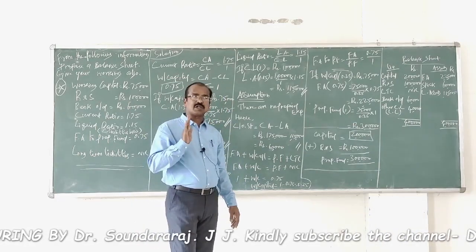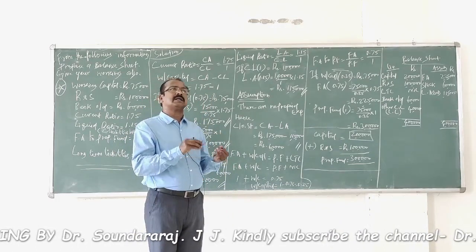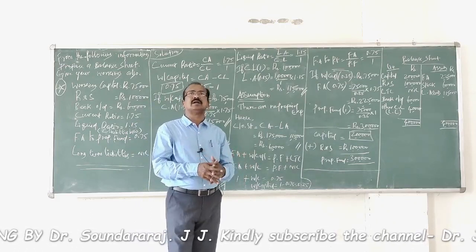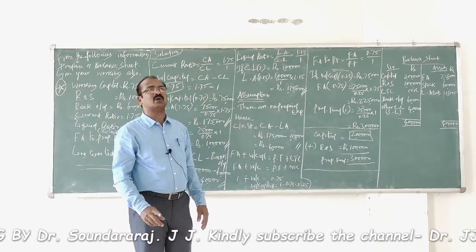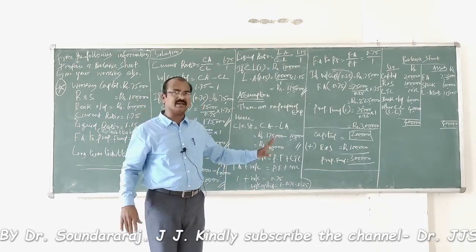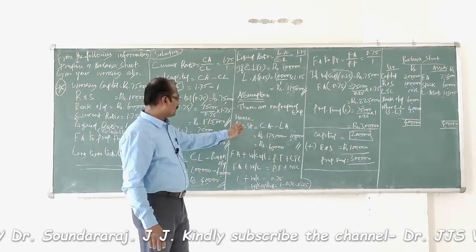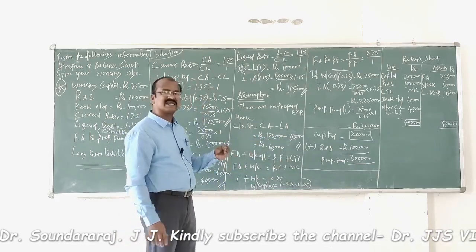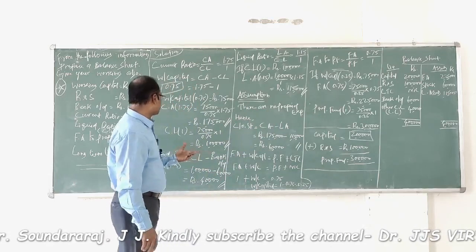The difference between current assets and liquid assets gives the value of stock and prepaid expenses. Since we do not know the details of prepaid expenses, we make the assumption that there are no prepaid expenses. Therefore, closing stock = Current Assets − Liquid Assets = ₹1,75,000 − ₹1,15,000 = ₹60,000.